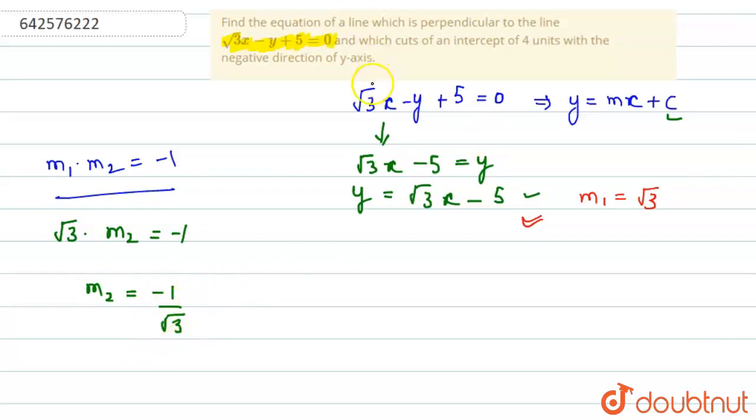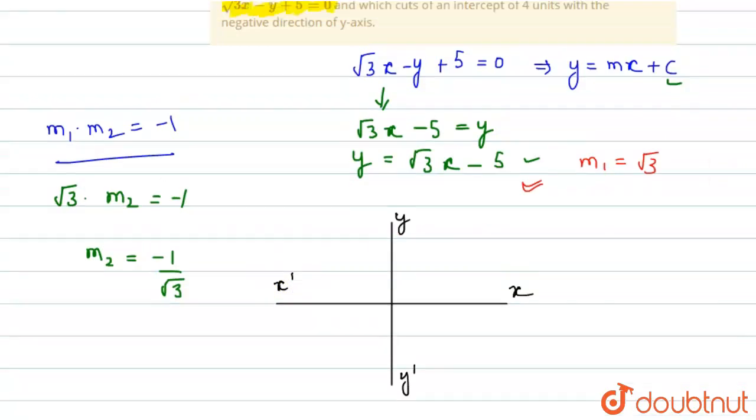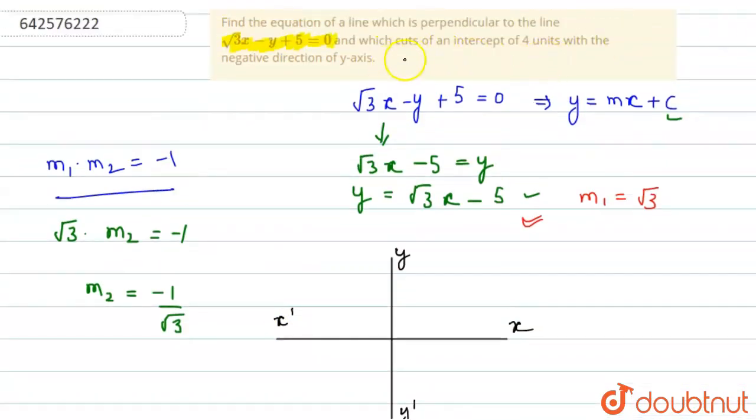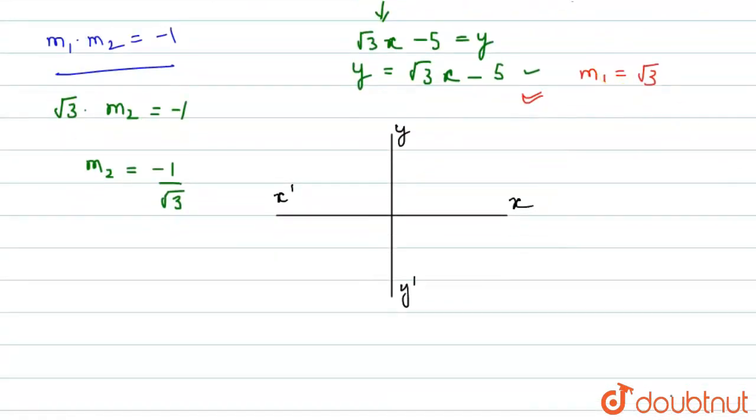Now, we have to find the intercept of 4 units. So, this is our x-axis. These are the x and y axes. This is y, this is y', this is x and this is x'. Now, the question states it cuts an intercept of 4 units in the negative direction of y-axis. So, for the negative direction of y-axis, these are the points in which y is negative.